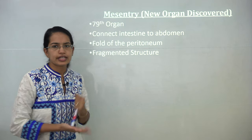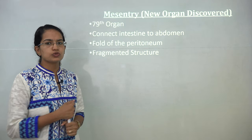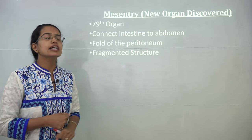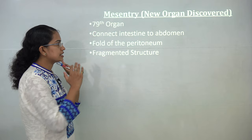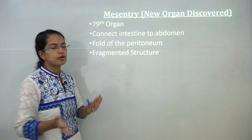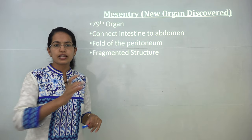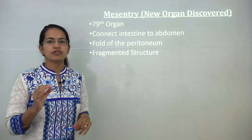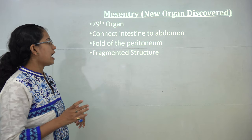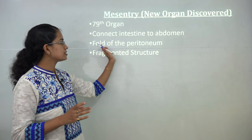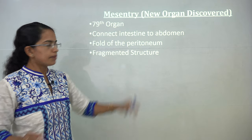A new organ has been discovered in the body known as the mesentery — the 79th organ of the body. It connects the intestine to the abdomen. Until now it was considered to be continuous, but studies now show it is fragmented and occurs on the folds of the peritoneum.